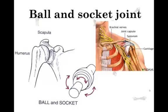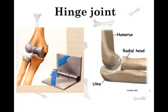A ball and socket is exactly what it says — on one end of one bone there's a ball, and on the other bone there's an indentation, a cup like a saucer, a socket. That ball fits into that socket, and there's cartilage and other things in there that enable it to move, held together by ligaments. Examples are your arm and shoulder, and your leg and hip — those are ball and socket joints.